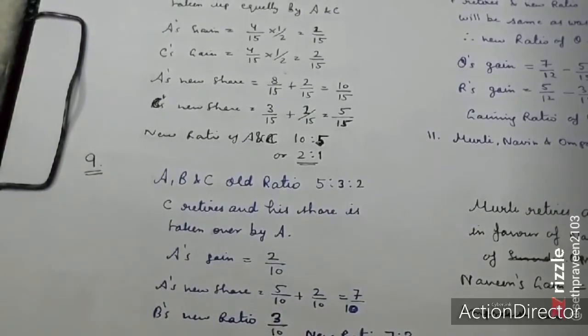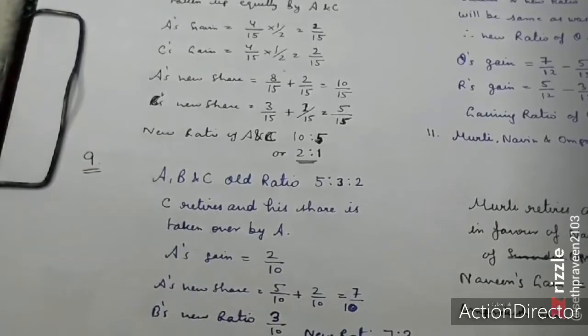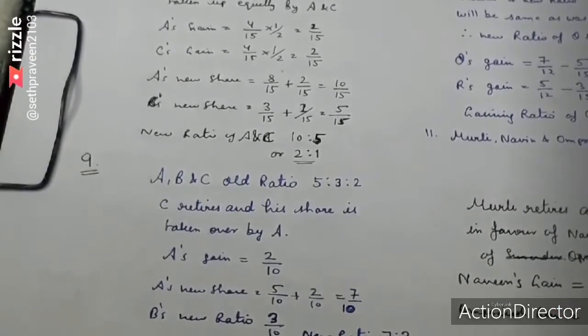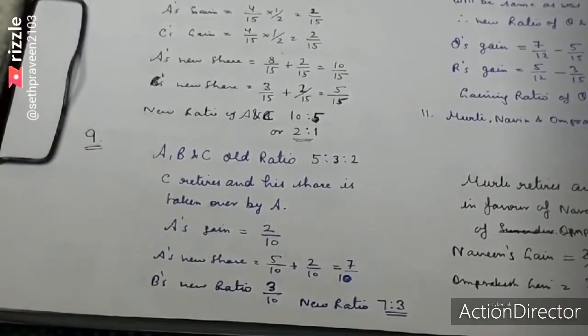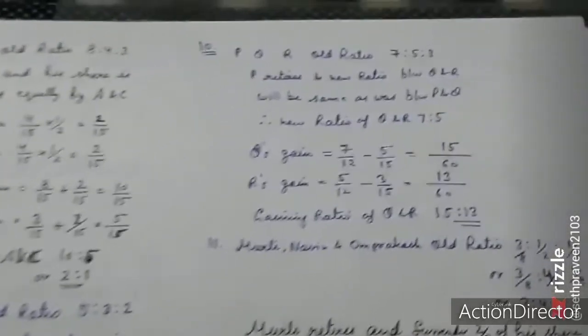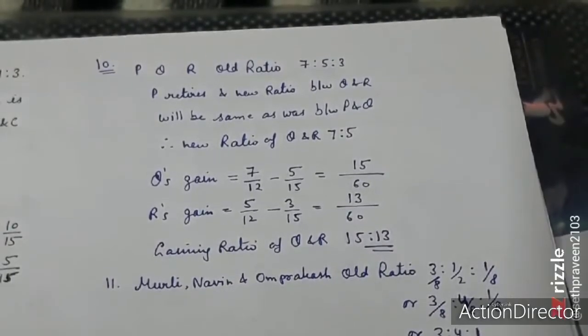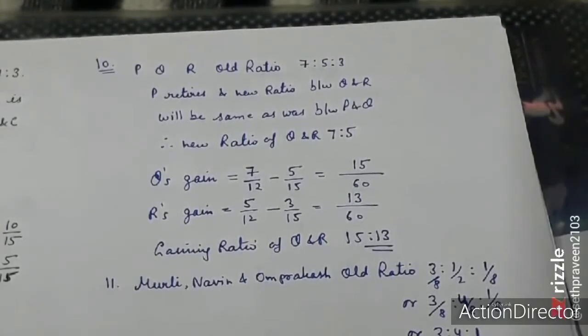I have also said that ABC's ratio is 5 to 3 to 2, and C has retired. All the shares go to A and B. The new share is 7 by 10, the new ratio is 7 by 10. The PQR is 7 by 10.